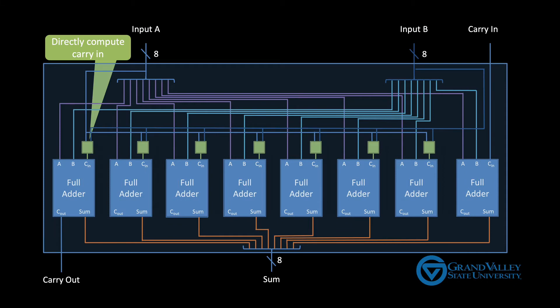This diagram replaces the yellow chain of carries with these little green boxes. Each green box determines a carry in directly from the inputs. Notice specifically that each green box has access to all eight input bits from both input A and input B. Now let's think about how to implement these little green boxes.